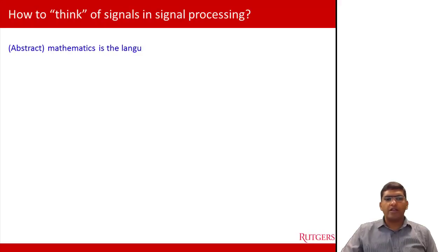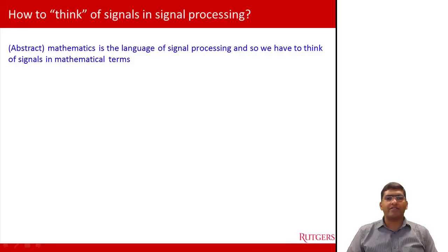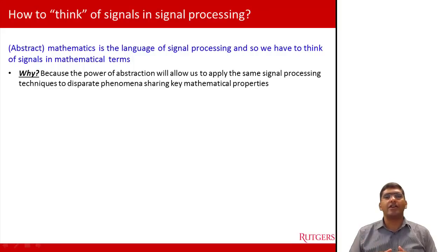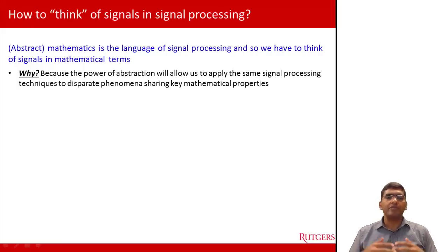One thing to keep in mind — which is something that many undergraduate students struggle with — is that the language of signal processing is abstract mathematics, so we have to think of signals in mathematical terms. The power of abstraction allows us to apply the same signal processing techniques to different phenomena, as long as the phenomena share the same mathematical properties. Just like when you're young and you learn that 2 plus 3 equals 5 — that has nothing to do with whether it's oranges, apples, or dollars — the same concept applies to the mathematics of signal processing.